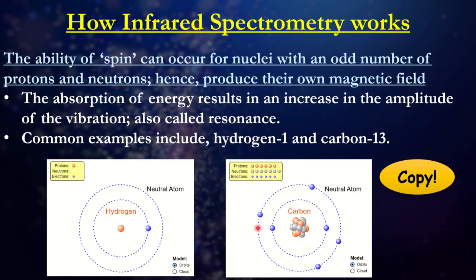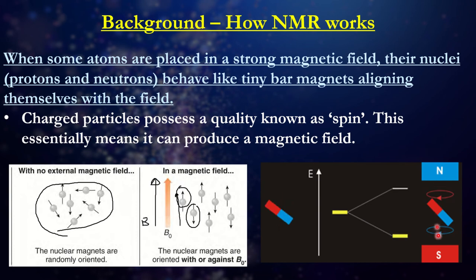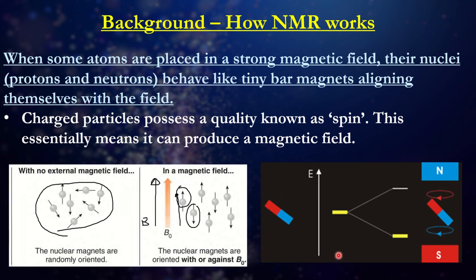There are two types of spins. One spin will give you a higher energy orientation, and another spin orientation will give you a lower energy state. Looking at the animation, assuming north is blue and south is red: when the north pole connects to the south pole, we have a lower energy orientation. When north faces north, we have a higher energy orientation.